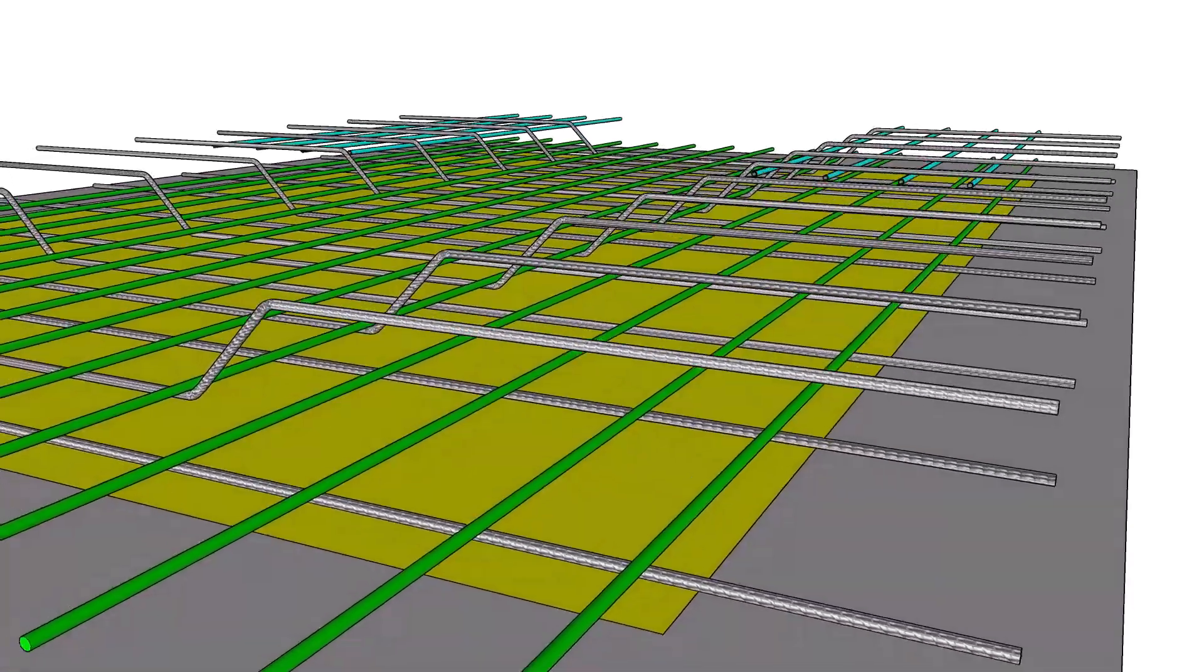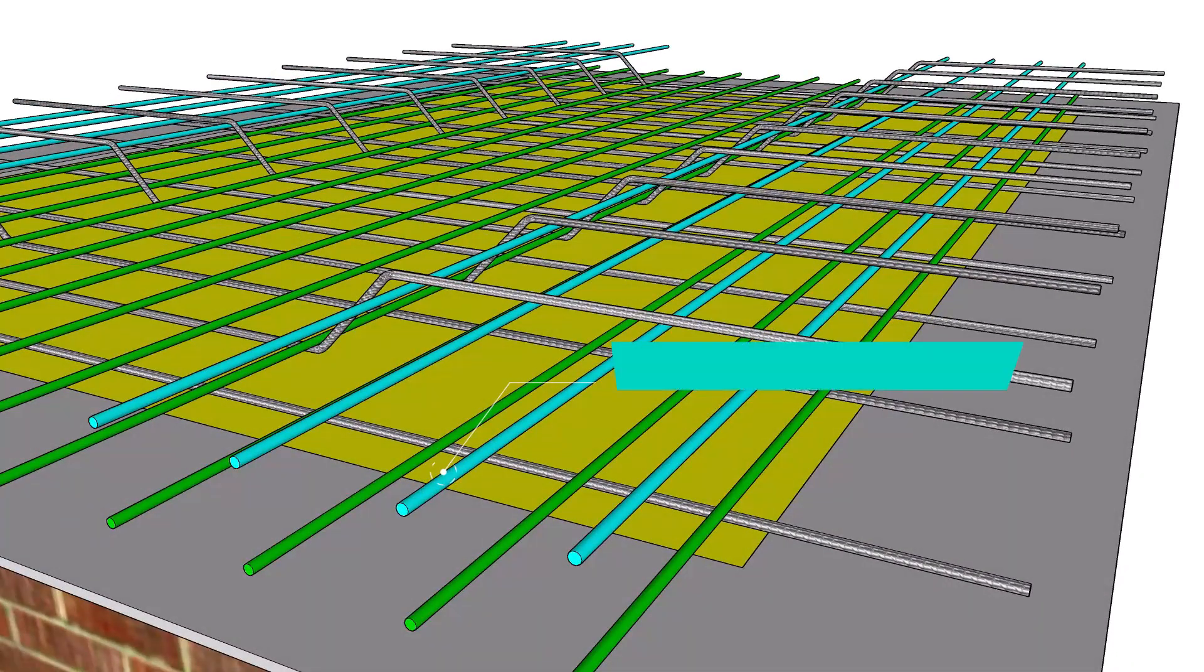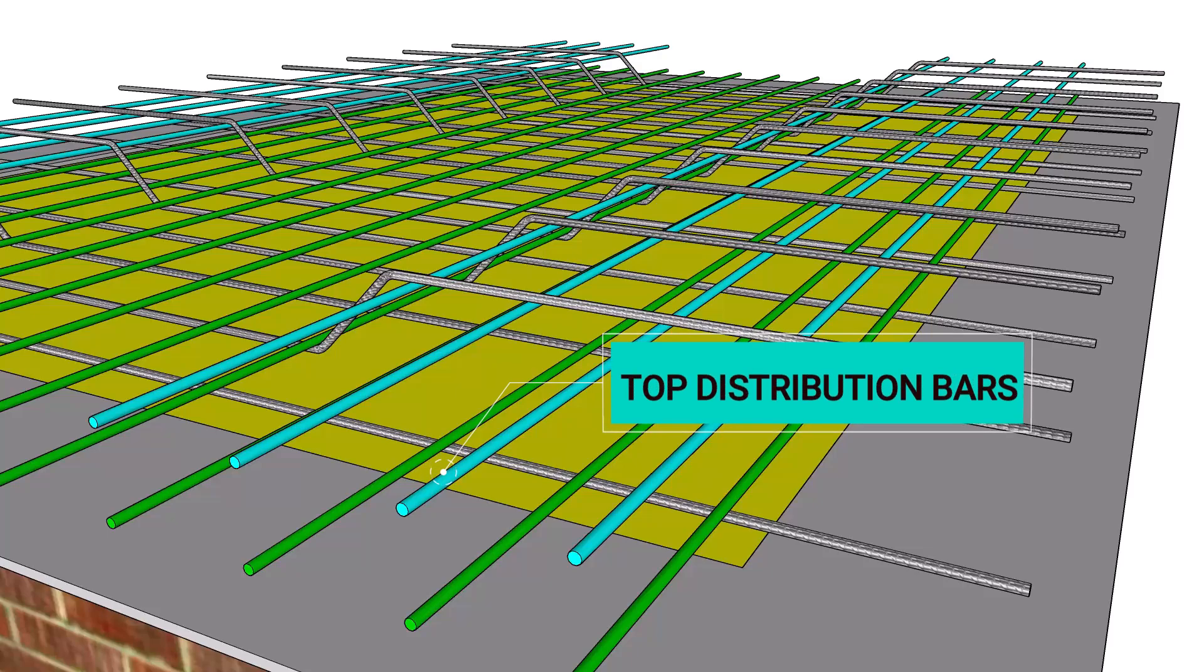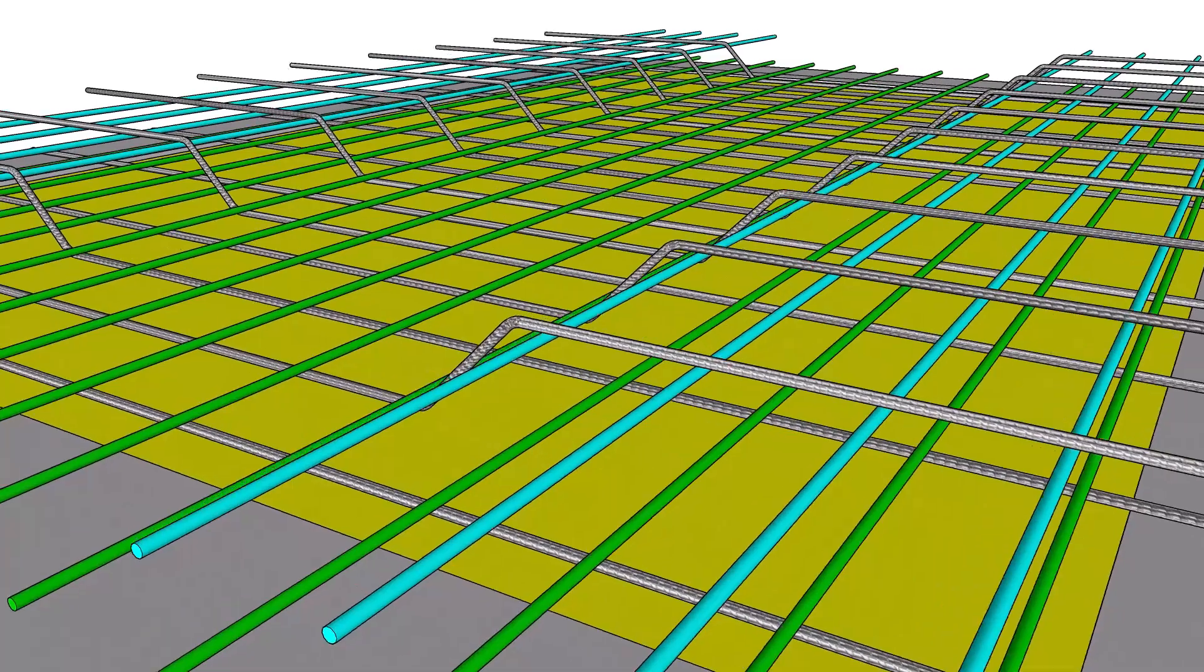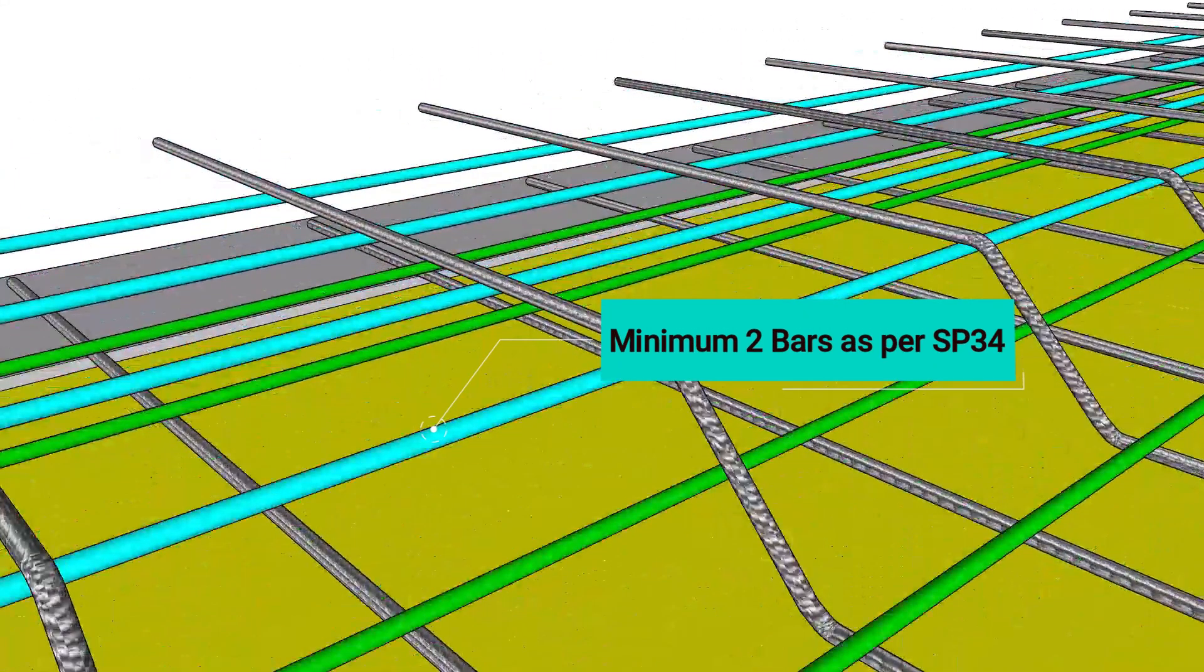Next up we have top distribution bars. These bars are typically positioned at the top across a critical length which is given as per the drawing and this length is usually taken as L by 4, where L is the shorter span of the slab. According to SP34, we shall provide a minimum of two top distribution bars.